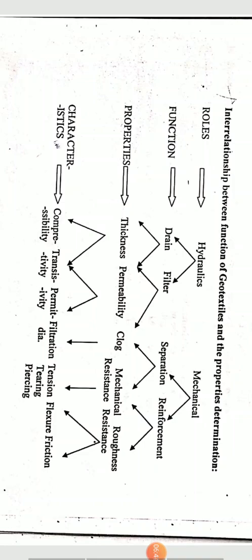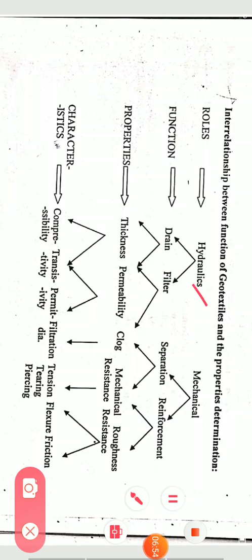Interrelationship between function of geotextiles and properties determination: the two major roles of geotextiles are hydraulic and mechanical. Hydraulic functions include drainage and filtration; mechanical functions include separation, reinforcement, and protection. Key properties include thickness, permeability, and mechanical resistance. Characteristics include compressibility, transmissivity, permittivity, filtration, tension, tearing, piercing, flexural stiffness, and friction.